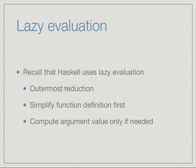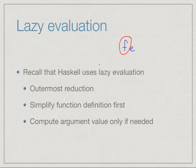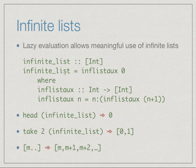We have seen that Haskell uses lazy evaluation — technically this is called outermost reduction. So given an expression of the form f e, Haskell will first try to apply a definition which simplifies the outer function f, and will compute the argument e only if e is required in the expansion of f.